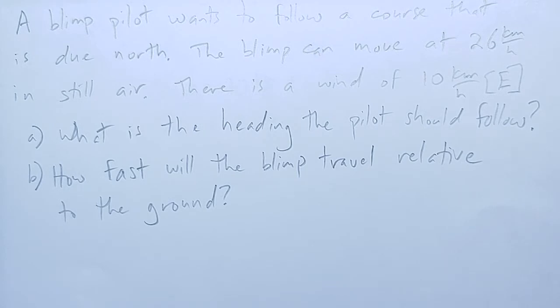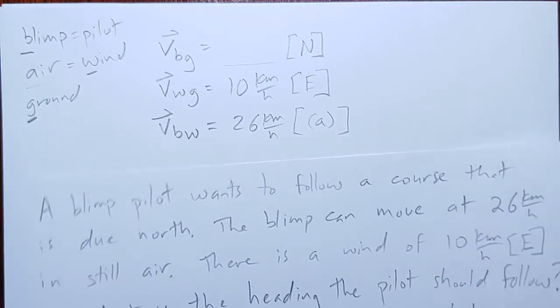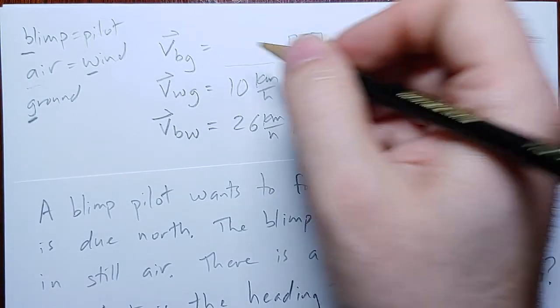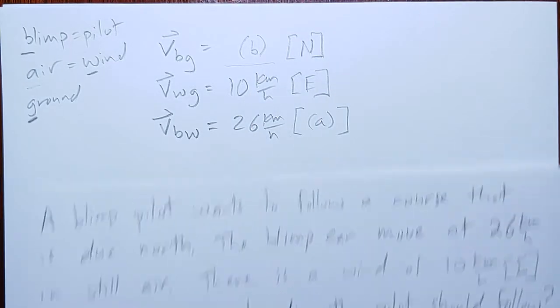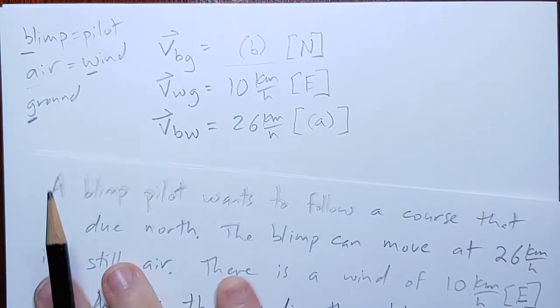And then, how fast will the blimp travel relative to the ground? So, the blimp relative to the ground is this. And so, we're just looking for a speed in part B, which is just how fast. And so, it's just the magnitude of that vector.